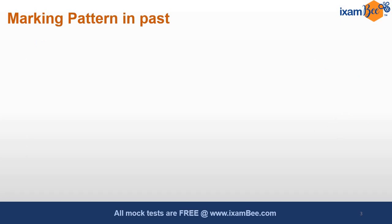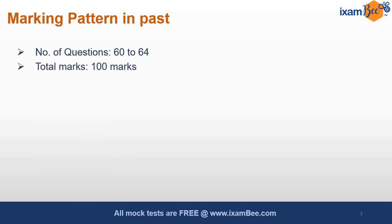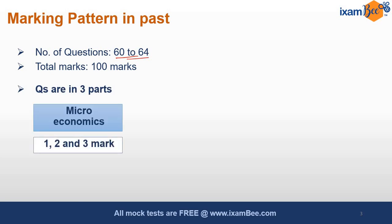The marking pattern here is very interesting — please understand this well because it ultimately helps in getting the score. The negative marking is very different here. There are 60 to 64 questions in Paper 1, which is 100 marks. Questions are in three parts: Microeconomics has questions of 1 mark, 2 marks, and 3 marks.